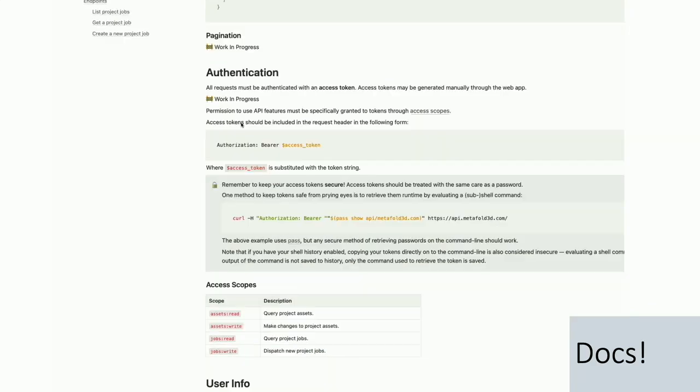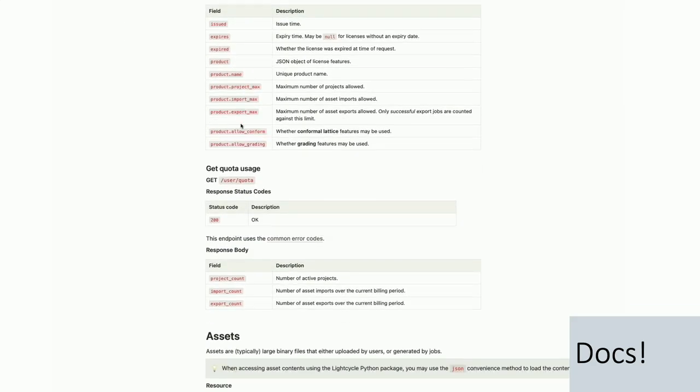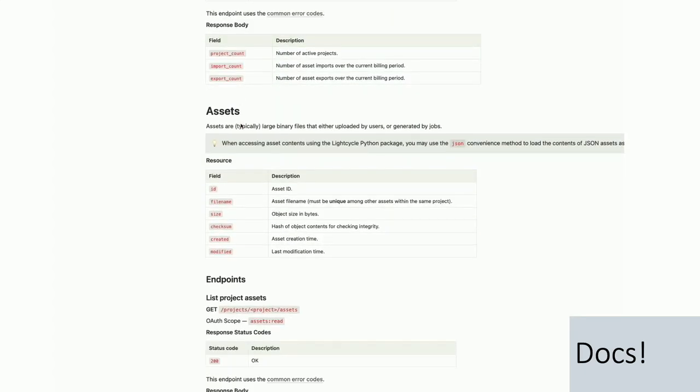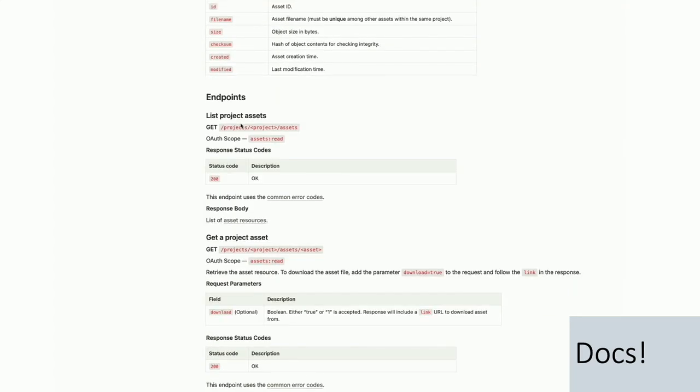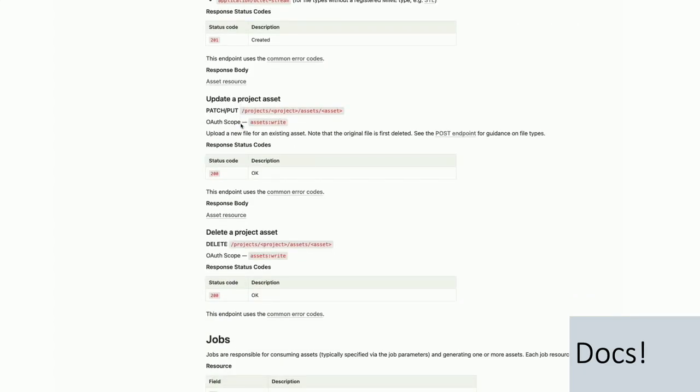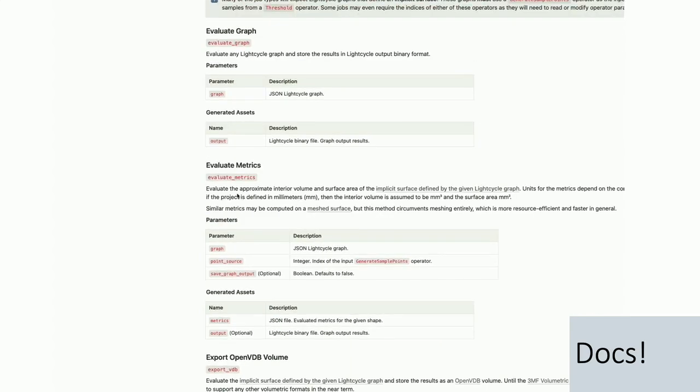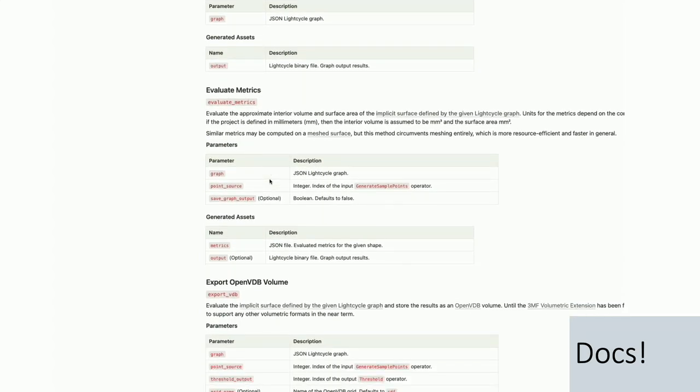With the API, though, we can do some really interesting things. So the web app is kind of a one-to-one relationship between the user and the parts. But with the API, we can do bulk queries. And we can process on a single GPU on the web, we can process close to 3,000 to 5,000 parts an hour.